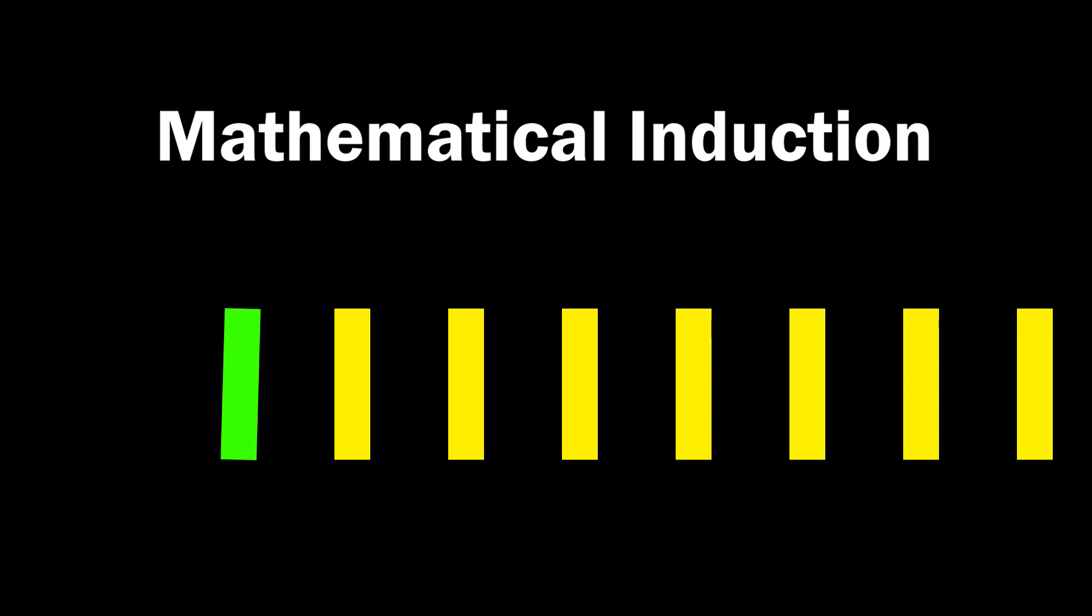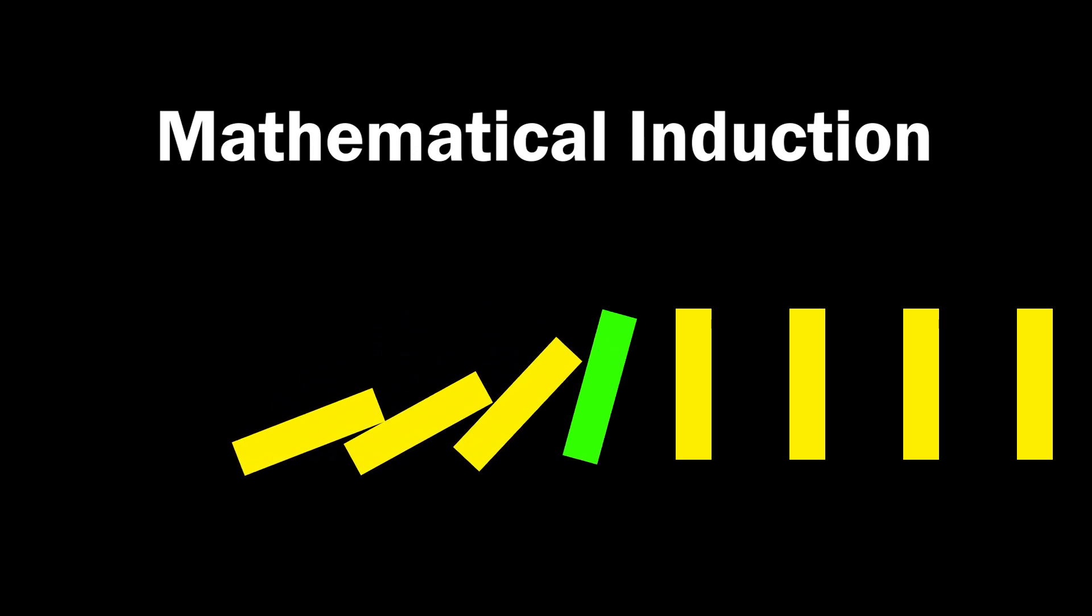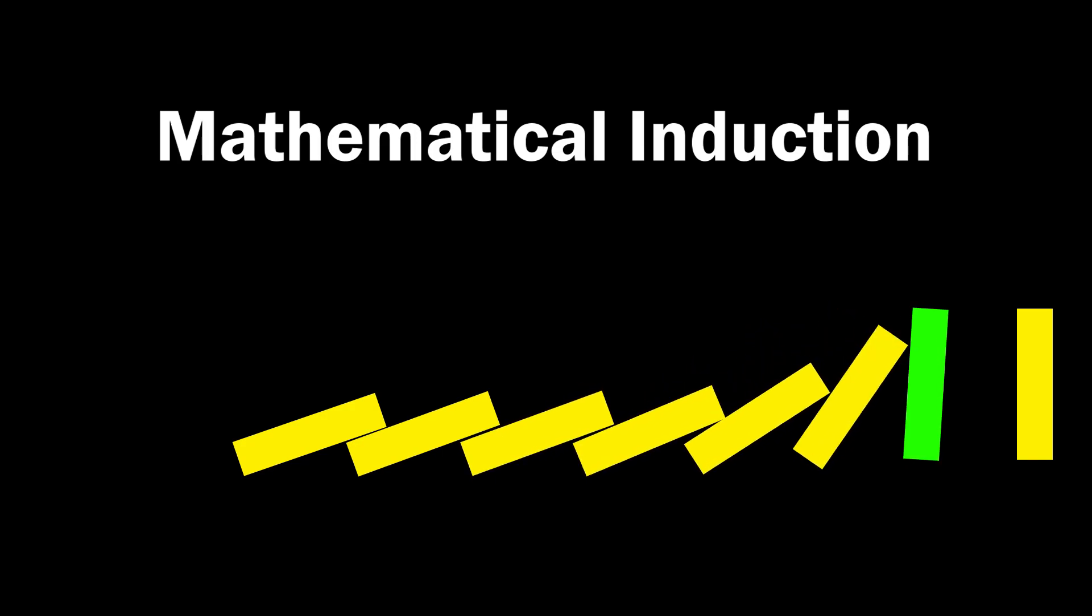First and foremost, the very first domino block must fall, right? Then if the second block falls, and the third one falls after that, and so on, it means all the blocks can fall in order.